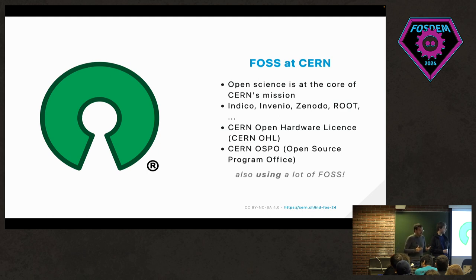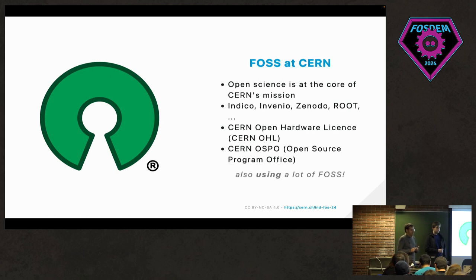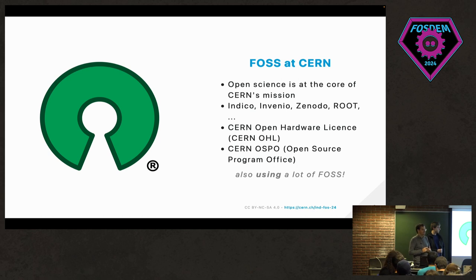Open science is really at the core of CERN's mission. They have a series of software products used around the world, developed mostly at CERN in collaboration with several labs — including Invenio, ROOT, White Rabbit, and others. There's also the CERN Open Hardware License, showing the lab was a pioneer in the open hardware movement. Last year they also set up their own Open Source Program Office. They also use a lot of open source software, many projects of which are represented today at FOSDEM stands.